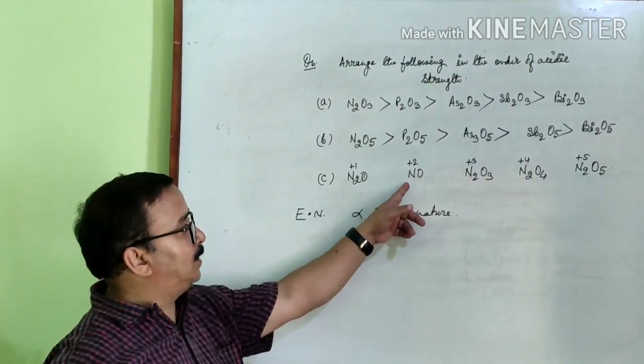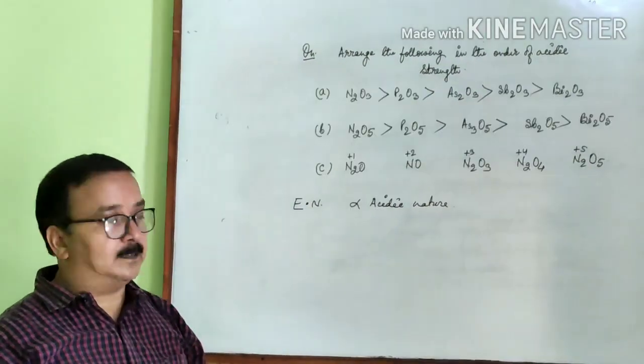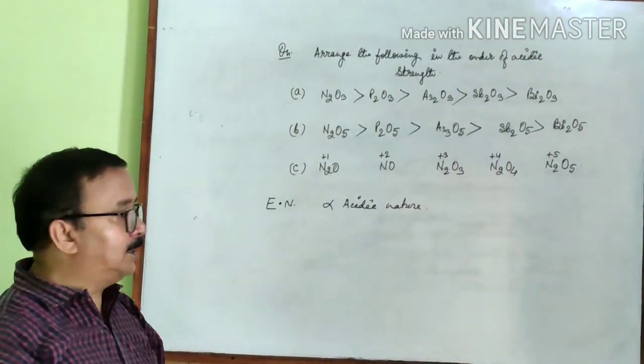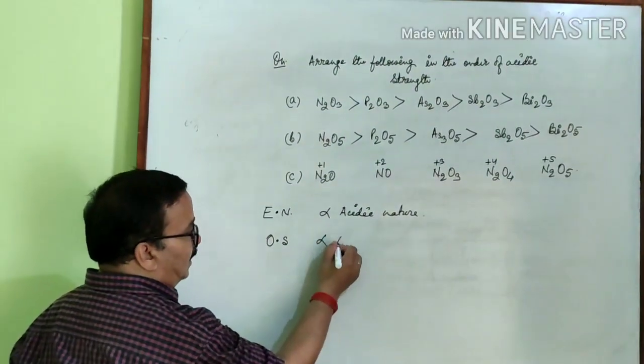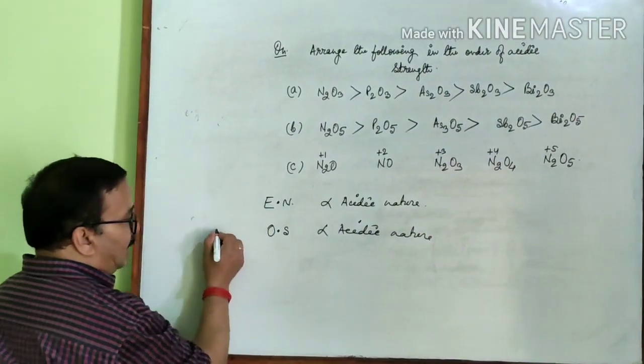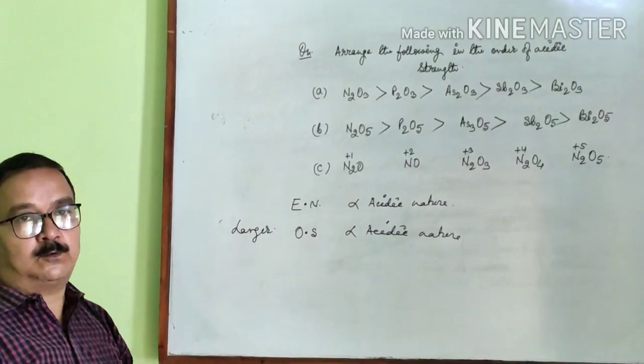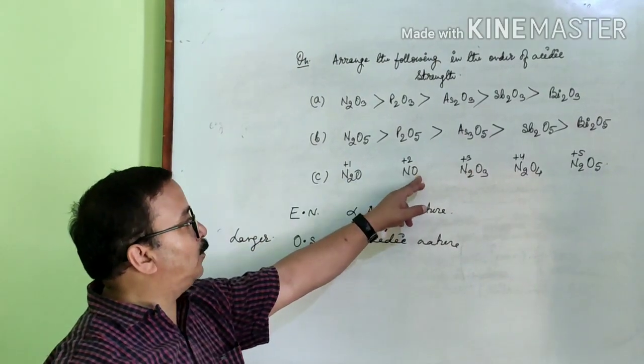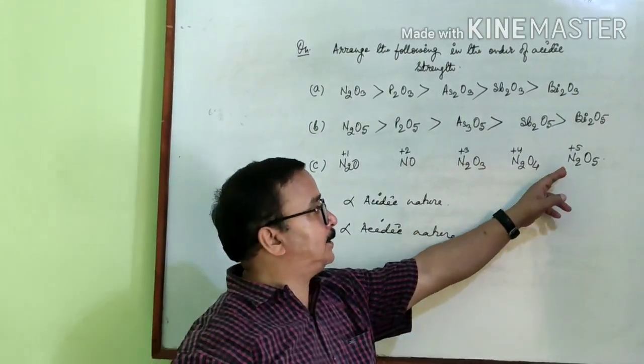Now number C: the problem here is central element is same as nitrogen. So how do we arrange this? When same element is there, then always remember that oxidation state is directly proportional to acidic nature. Larger oxidation state means more acidic nature. In N2O nitrogen oxidation state is +1, in NO it's +2, N2O3 is +3, N2O4 is +4, and N2O5 is +5.